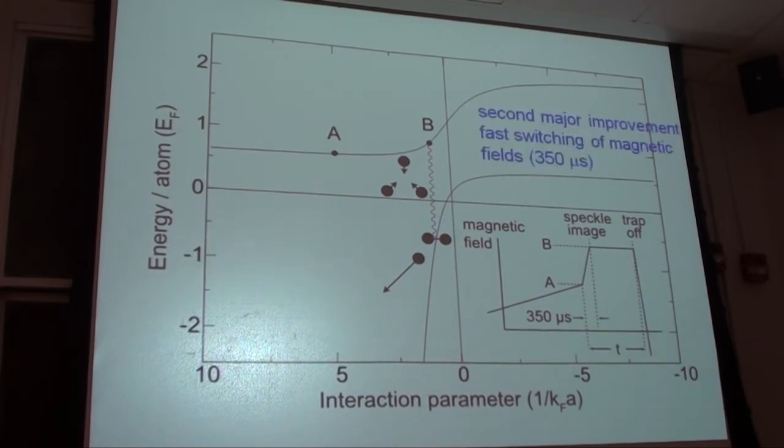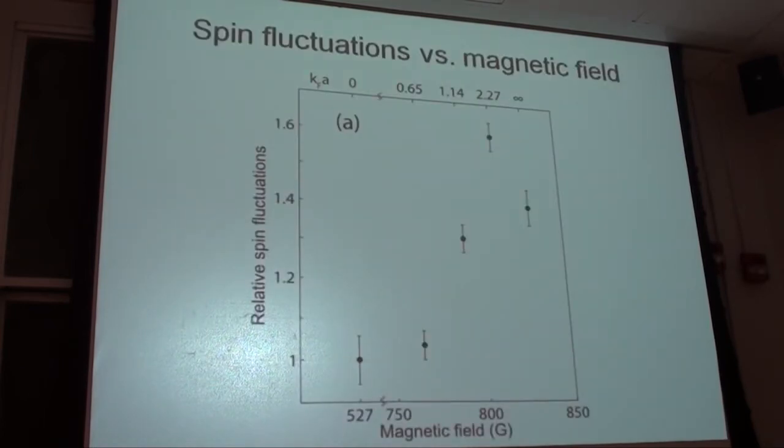The second thing we added is we had extremely fast time resolution. When we approached the Feshbach resonance by discharging high voltage capacitors, a little bit wild and crazy, but we could now switch on strong currents for big coils in 300 microseconds. So now we have very good time resolution in suddenly switching on the repulsive interaction. Let me give you the two results on the time resolved measurement and on the fluctuations.